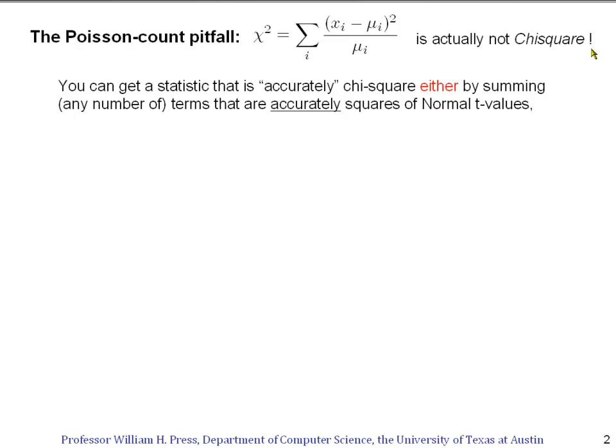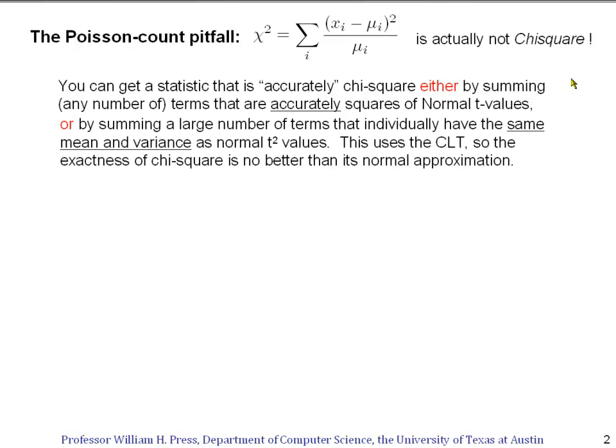You can get a statistic that is accurately chi-square distributed in one of two ways. Either you can sum any number of terms that are individually accurate squares of normal t values, because that's the definition of chi-square. Or, asymptotically, you can get something that's asymptotically chi-square by summing a large number of terms — in other words, if the number of bins is very large — a large number of terms that individually have the same mean and variance as normal t-squared values. That works because of the central limit theorem.